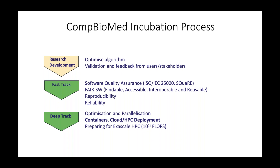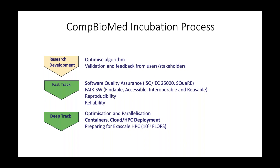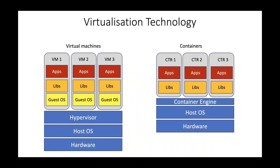There are three stages in this graduation process. The first is the development as a research application, where you optimise the algorithm and get feedback from users. The second stage, where CompBioMed starts, involves optimising software, improving reliability and quality assurance, documenting software, ensuring reproducibility, and meeting the FAIR software principles: findable, accessible, interoperable, and reusable. The last step is to make the software optimised to run on HPC systems — parallelising, making it container-ready for HPC deployment, and preparing for exascale machines.